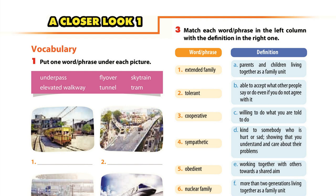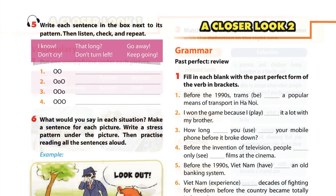Unit 6, Page 63, A Closer Look 1. Pronunciation, Activity 5. Write each sentence in the box next to its pattern. Then listen, check and repeat.